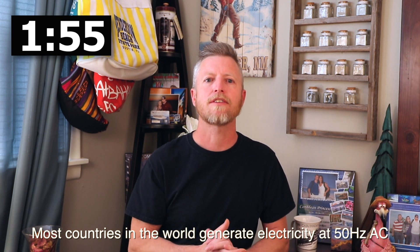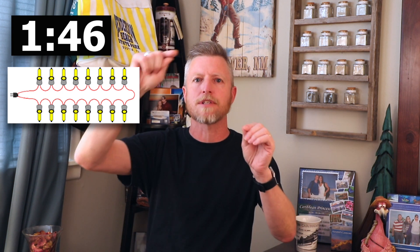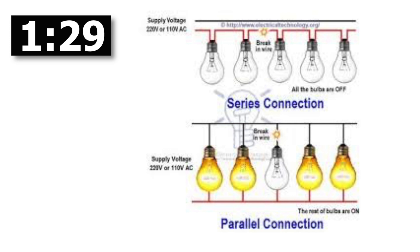In a series circuit, the electric current flows in a series around the bulbs from one to the next — so when one bulb goes out, they all go out. You're familiar with this if you've used older Christmas lights. A parallel circuit, on the other hand, means there's an alternate path for the current, so if one light bulb goes out, electricity can still flow to the next object in line. More modern Christmas lights are developed this way, so if you lose one, they don't all go out.